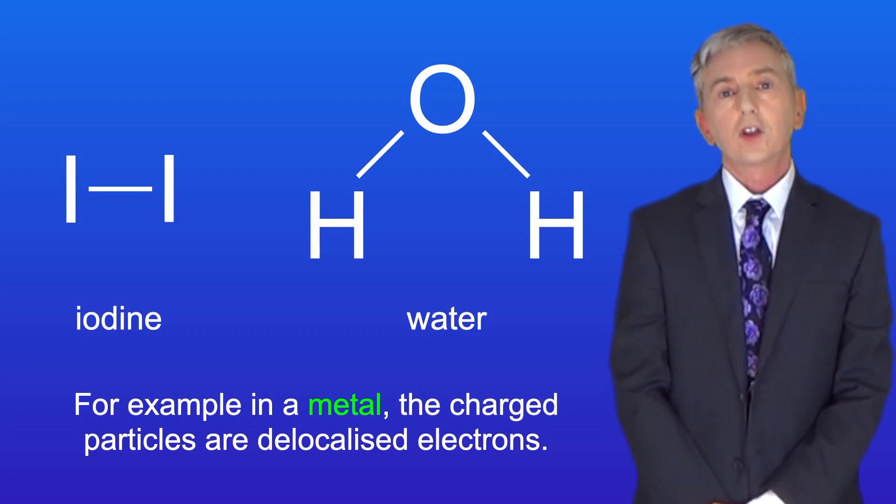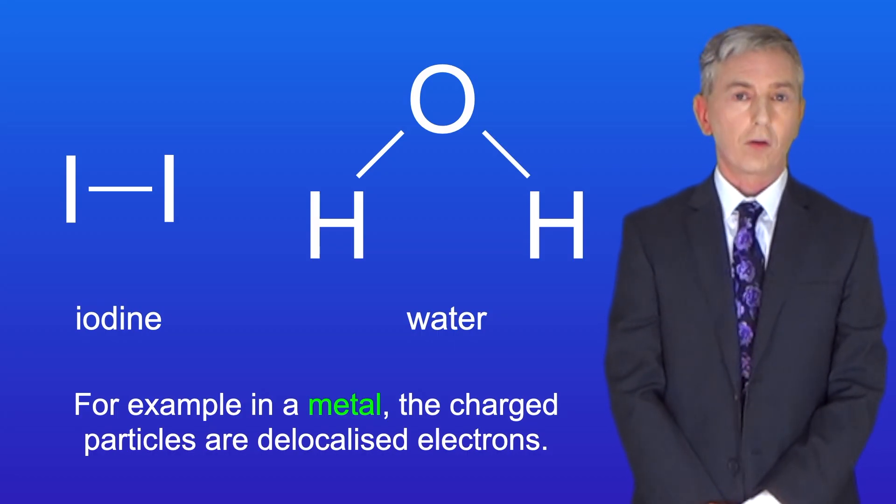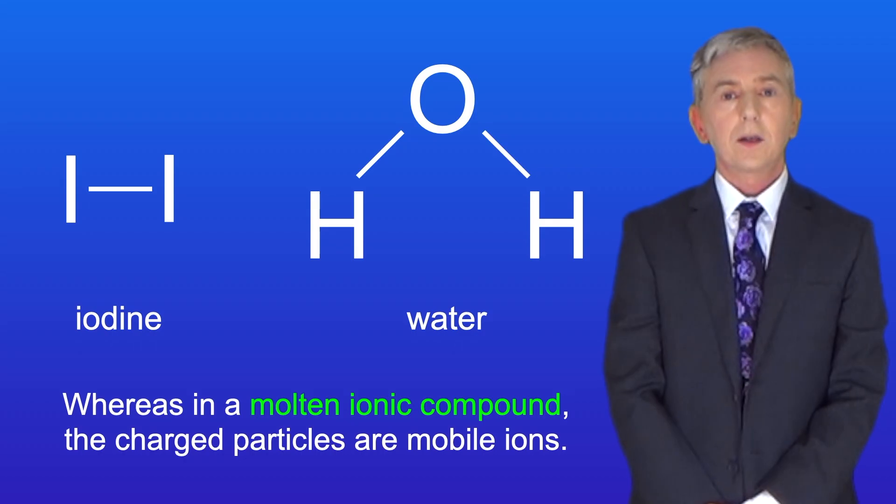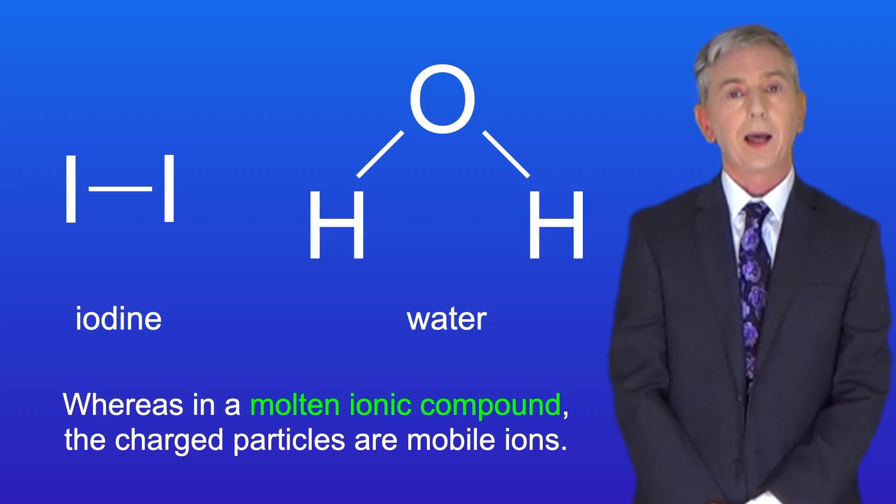For example, in a metal, the charged particles are delocalized electrons. Whereas in a molten ionic compound, the charged particles are mobile ions.